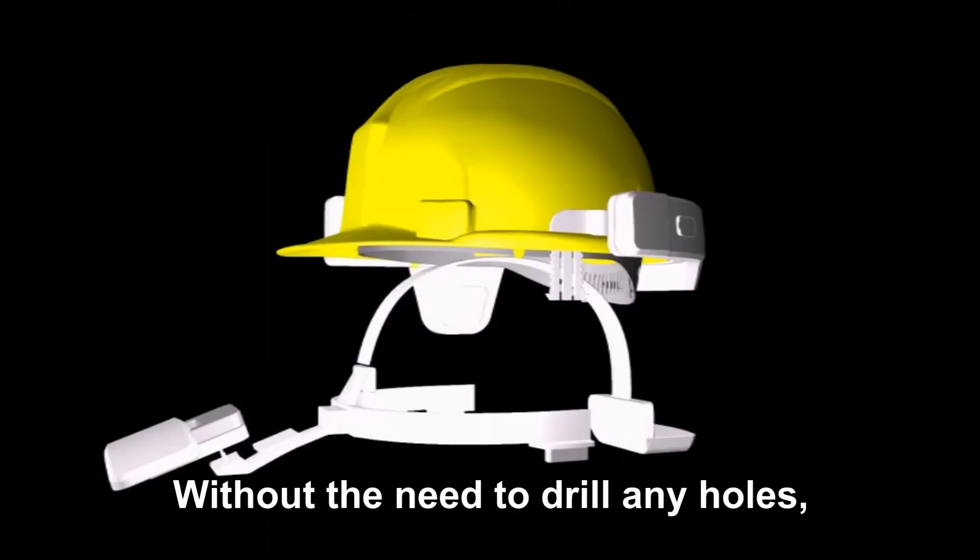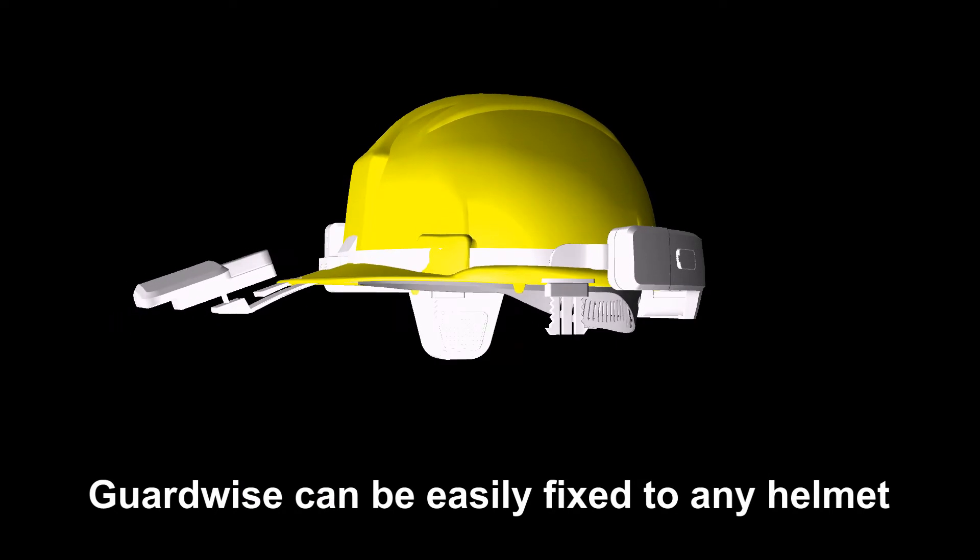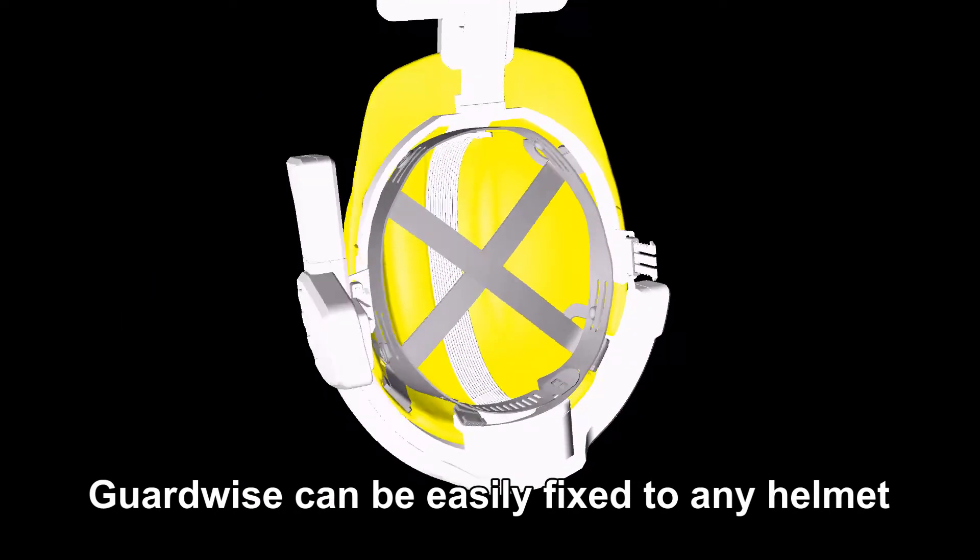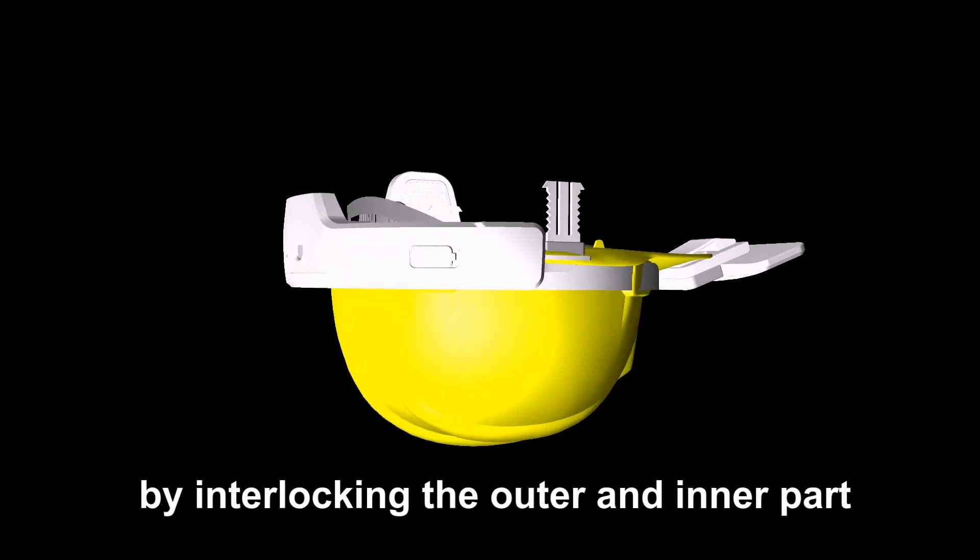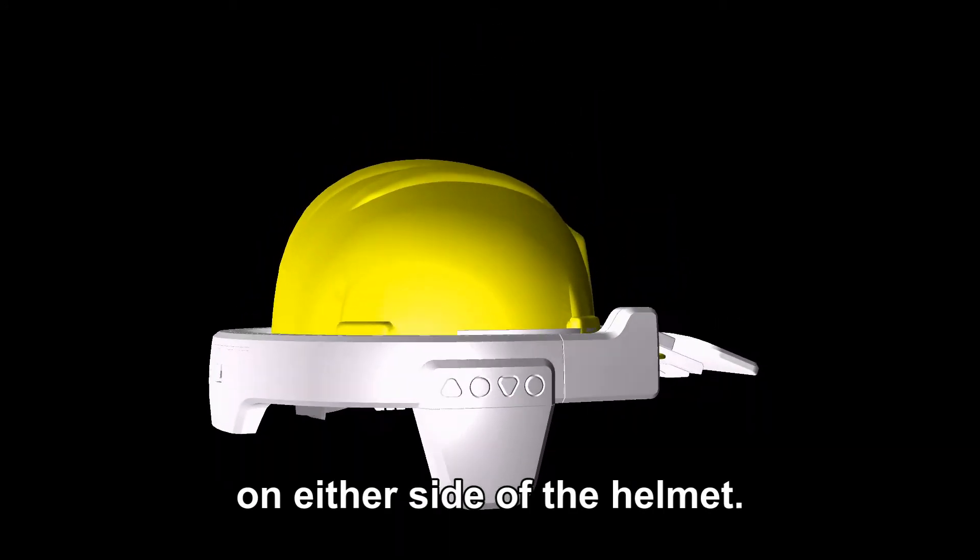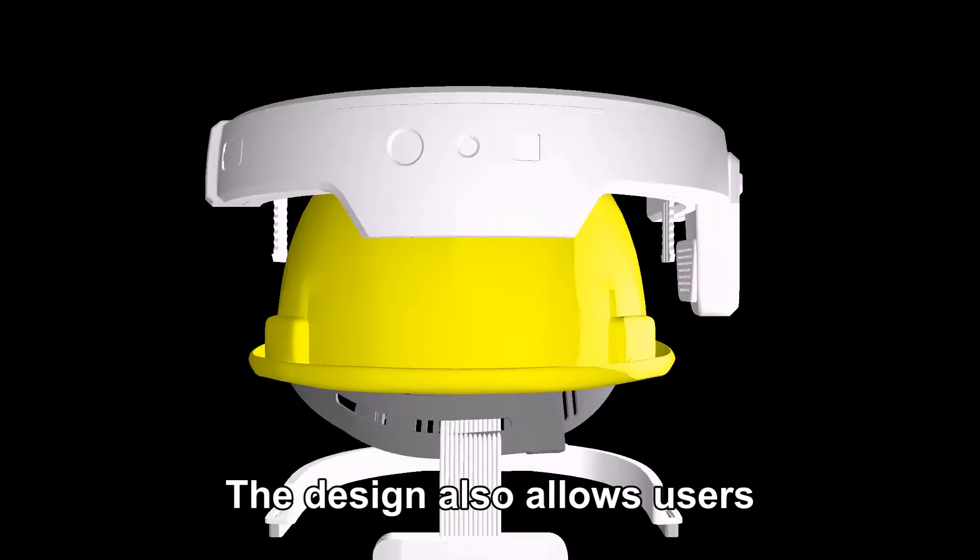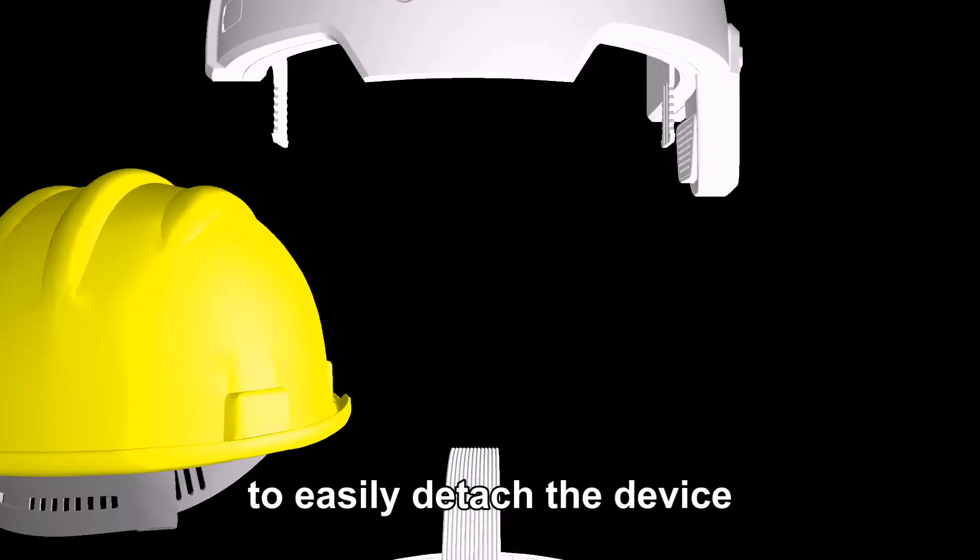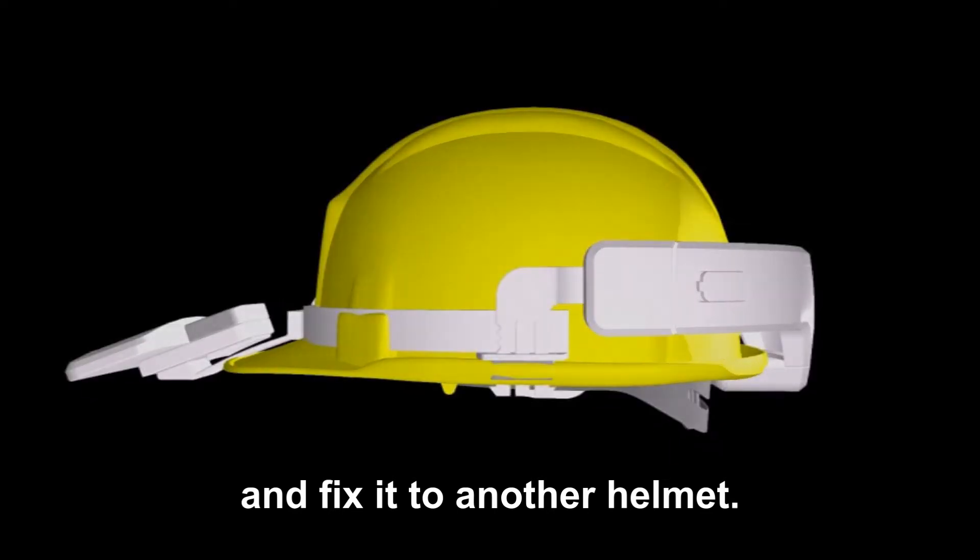Without the need to drill any holes, GuardWise can be easily fixed to any helmet by interlocking the outer and inner part through the two existing slots on either side of the helmet. The design also allows users to easily detach the device and fix it to another helmet.